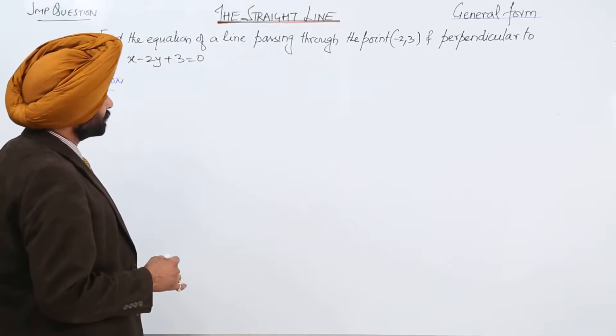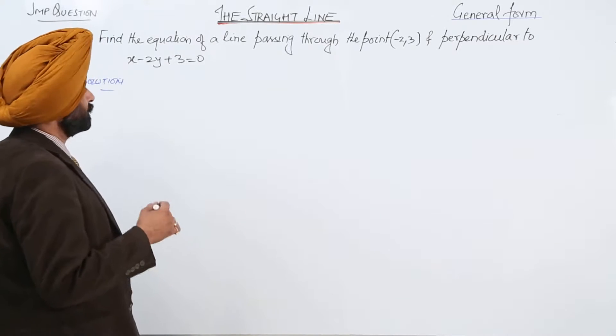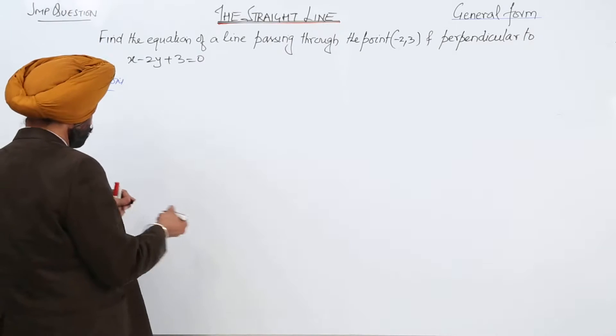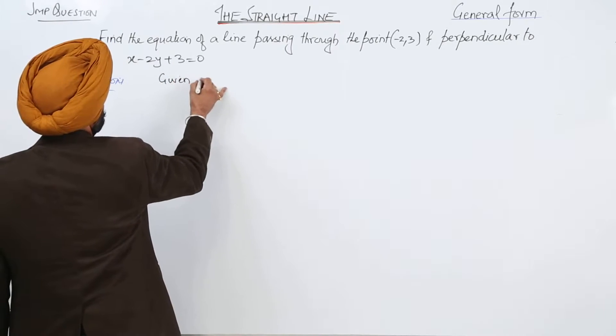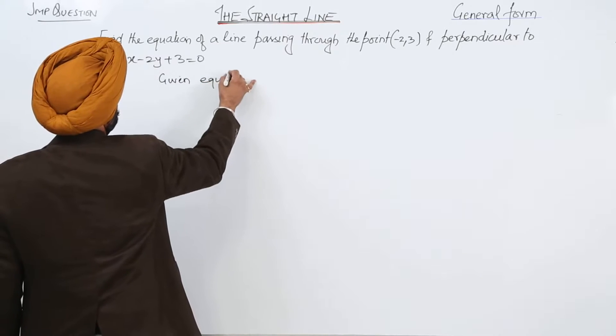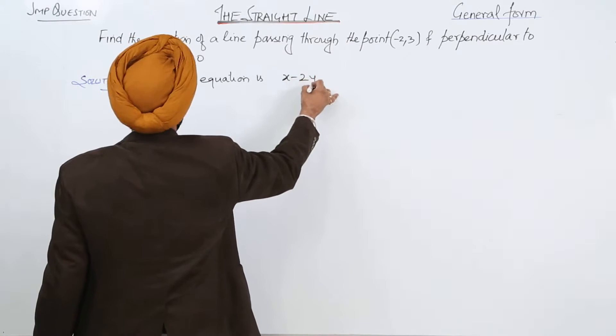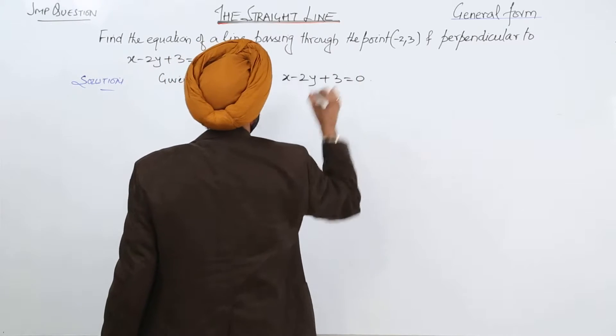Find the equation of a line passing through the point and perpendicular to the equation x minus 2y plus 3 is equal to 0. Given equation is x minus 2y plus 3 is equal to 0.